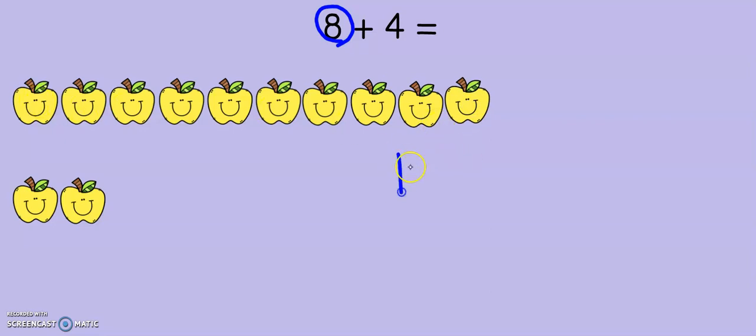Okay, so now I have 10 plus, how many do I have left on the bottom? 2. And that gives me 12. So, all I did was move some of those apples to make a new 10 to help me add easily.